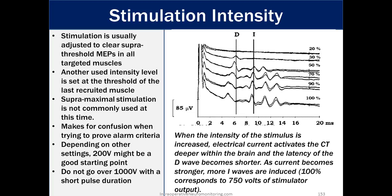When the intensity of the stimulus is increased, electric current activates the cortical track deeper within the brain and the latency of the D-wave becomes shorter. As currents become stronger, more I-waves are introduced. 100% corresponds to 750 volts of stimulator output. So in the picture above, we see that the decrease in latency of the D-wave as we have a larger volts output, and we see I-waves starting to come in right at that 50% area and are much larger in amplitude and more in number when we start getting even higher.